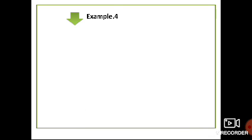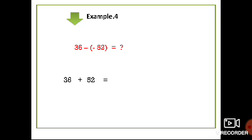Example 4: 36 minus minus 52. Write the first number as 36, then change subtraction to addition. The additive inverse of minus 52 is plus 52, so we write 52. This is normal addition of positive numbers: 36 plus 52 equals 88.